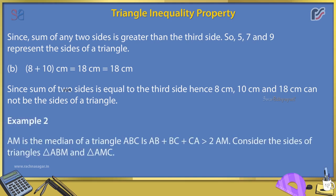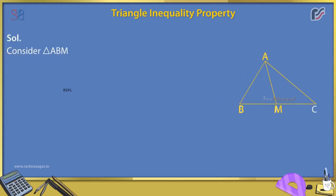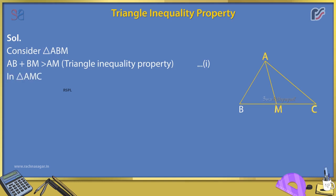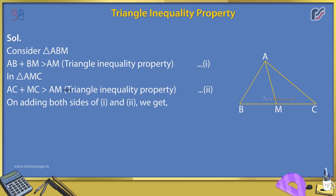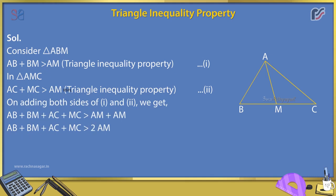Example 2: M is the median of triangle ABC. Is AB + BC + CA > 2AM? Solution: In triangle ABM, AB + BM > AM (triangle inequality). In triangle AMC, AC + MC > AM. Adding both: AB + BM + AC + MC > 2AM. Since BM + MC = BC, we get AB + AC + BC > 2AM. Hence the result.